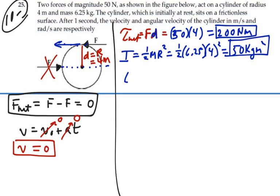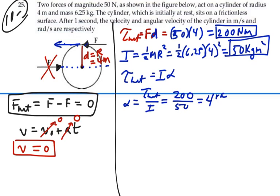So since our net torque should equal the moment of inertia times the angular acceleration, the angular acceleration is the net torque divided by the moment of inertia. That's going to be 200 divided by 50, or 4 radians per second squared. That is our angular acceleration for rotation on this disc.